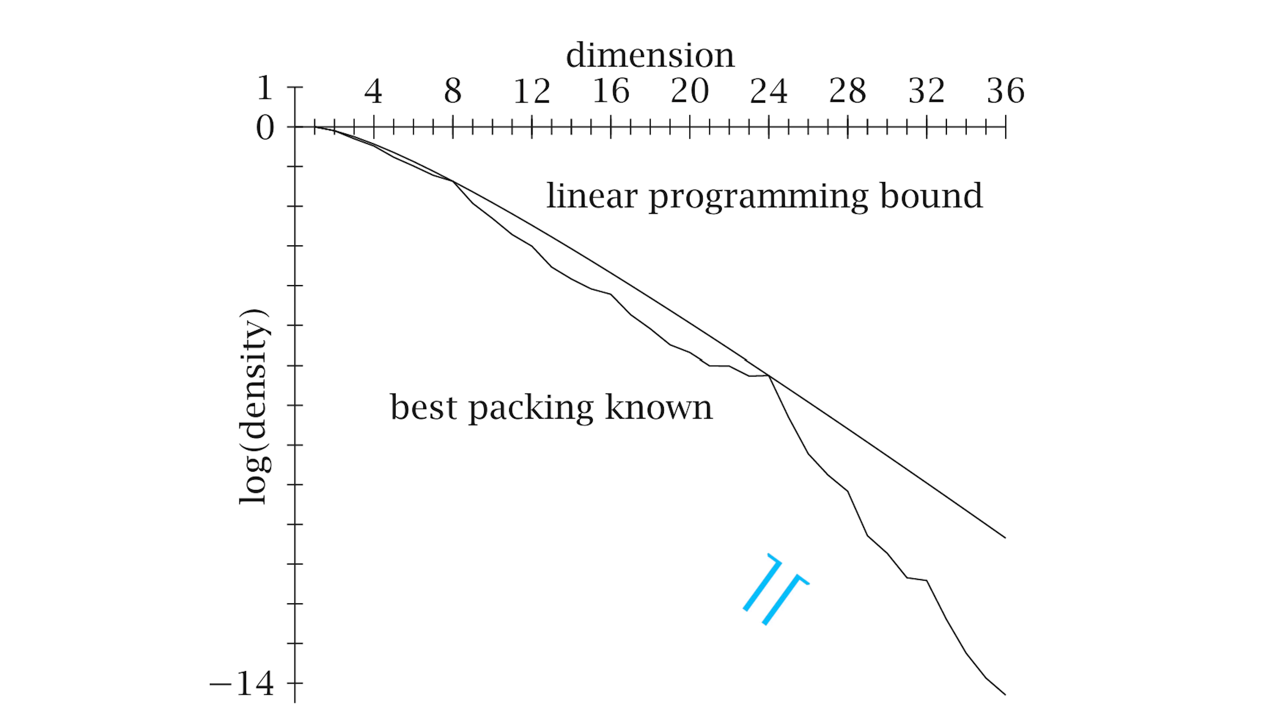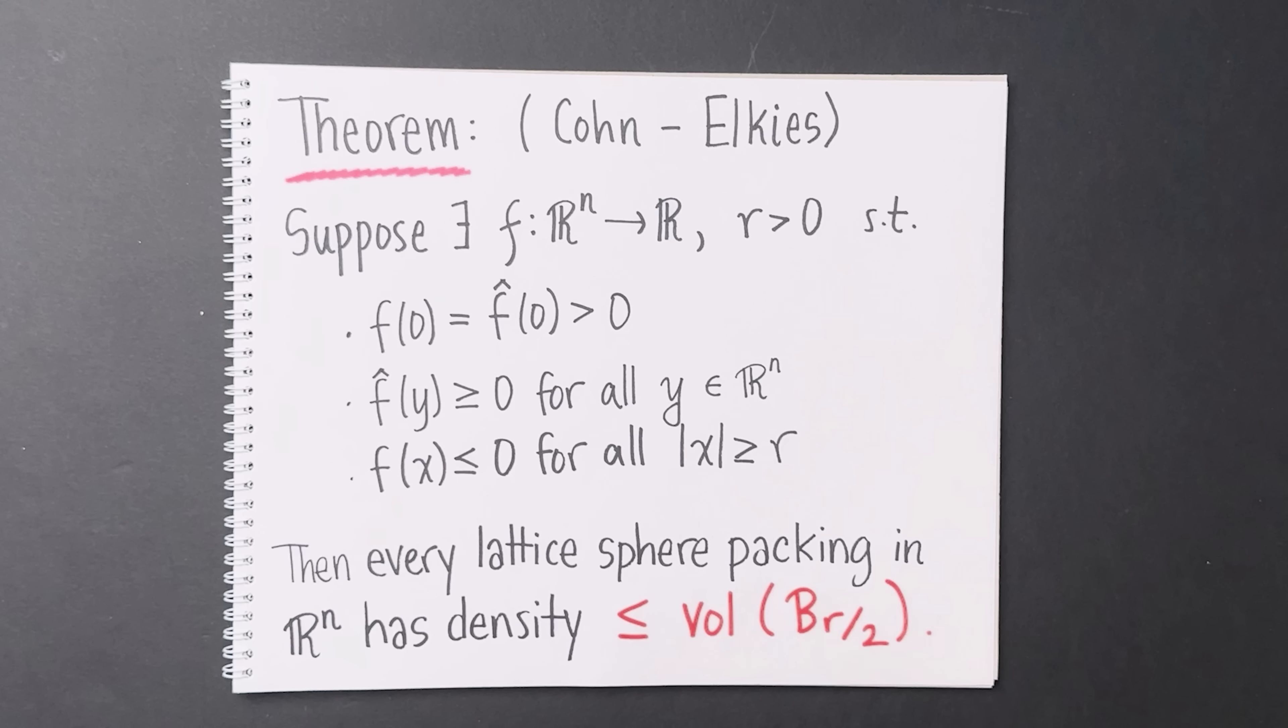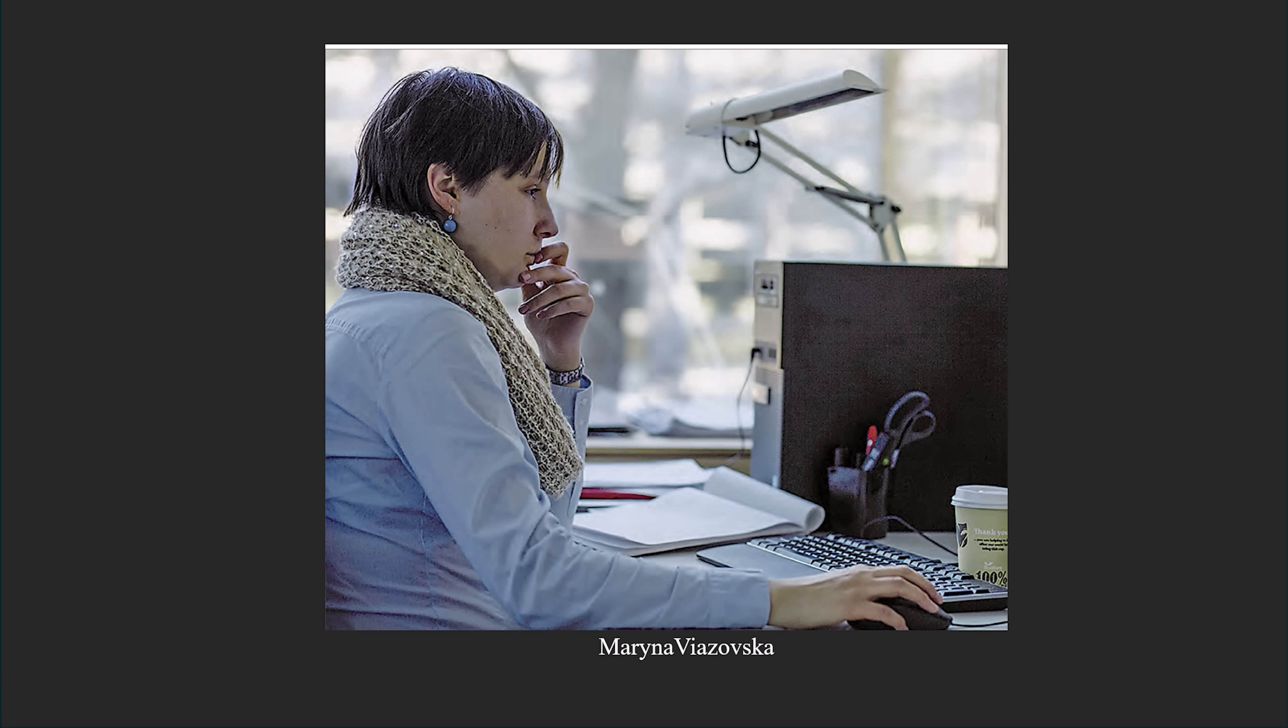Here's the graph of the densest known packing, and here's the upper bound given by Cohn and Elkes' proof. Note that in dimensions 8 and 24, these two graphs touch. So if you could construct a magic function f in dimensions 8 or 24 with all these properties, that would prove that the best known packing is actually optimal. That's precisely what Vyazovska did in 8 dimensions.